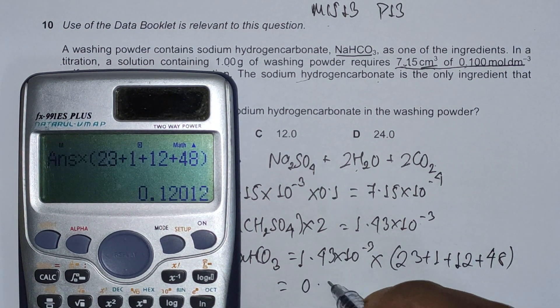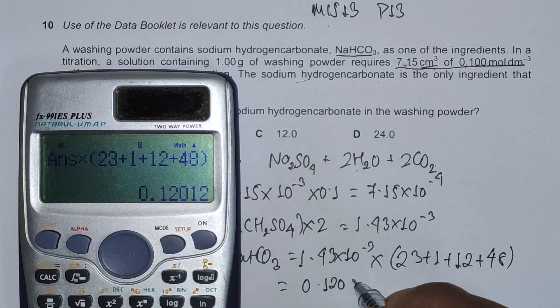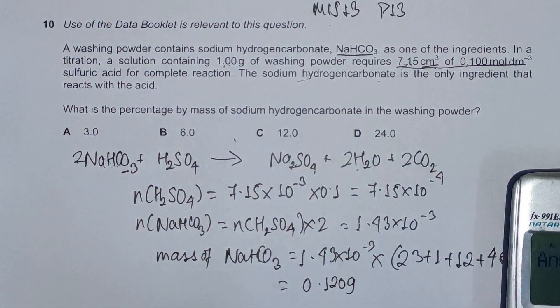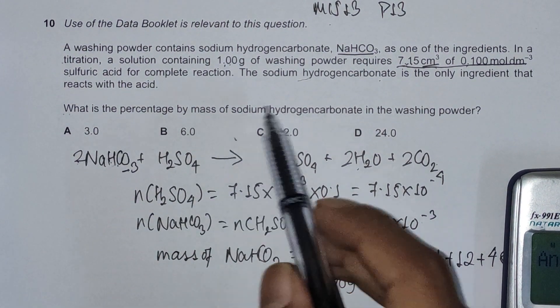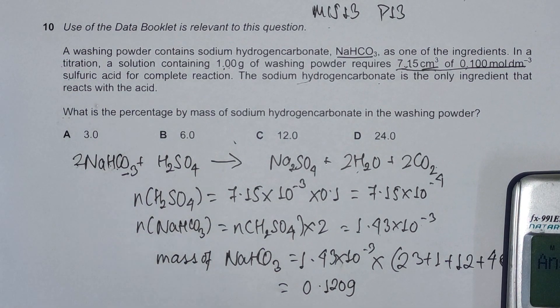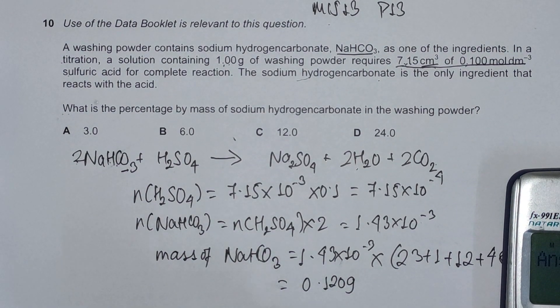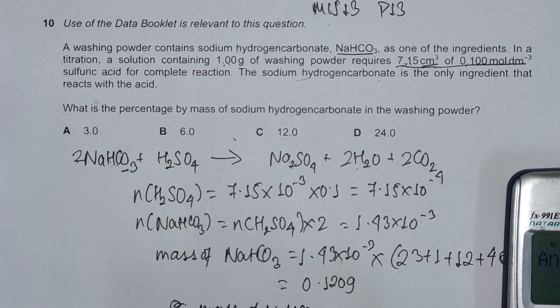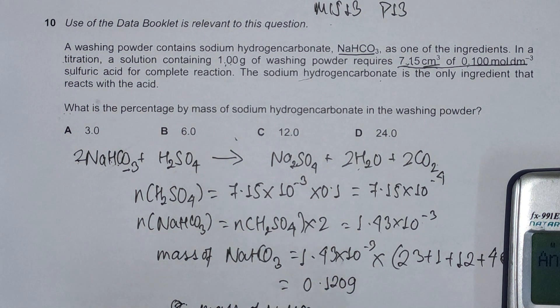Now, the solution has 1.00 gram of washing powder. The question asks what is the percentage by mass of sodium hydrogen carbonate in the washing powder. To find the percentage by mass, we need to do: mass of NaHCO3 divided by mass of the washing powder, multiplied by 100.